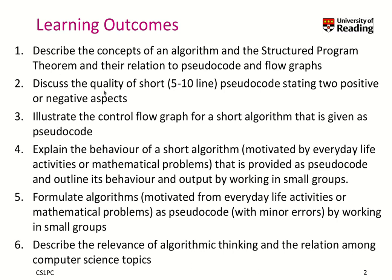As part of the learning objectives, you find sometimes qualifiers that restrict the scope of what a learning outcome means. For example, in Learning Outcome 2 we see: 'discuss the quality of short pseudocode.' Short is defined as five to ten lines of text. We also see 'stating two positive or negative aspects,' so that gives you a good idea what you should be able to do when given some short pseudocode.